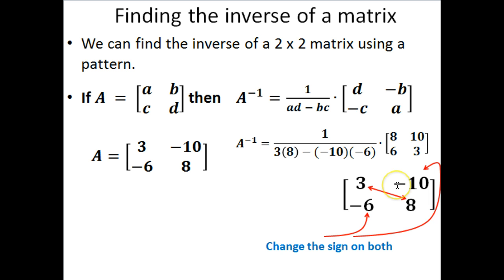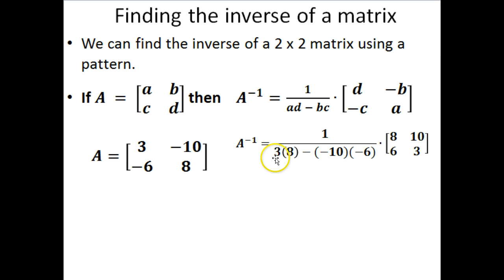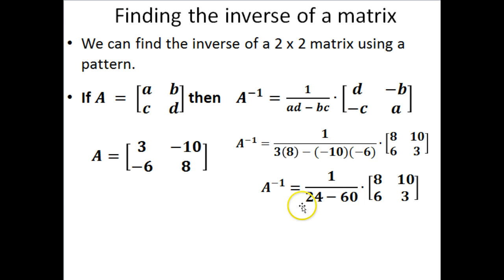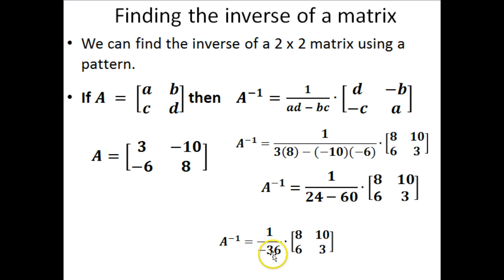Now that we have this, let's get rid of the reference matrix — that was just for illustration purposes anyway. Now we've got all of our numbers plugged in correctly. Now it's just a matter of simplifying and multiplying it together. 3 times 8 is 24, and negative 10 times negative 6 would be 60. So we've got 24 minus 60. I did not change this matrix at all — all I did is simplify this: 24 minus 60. Well, 24 minus 60 is negative 36. So this is the same thing as 1 over negative 36 times this matrix here.